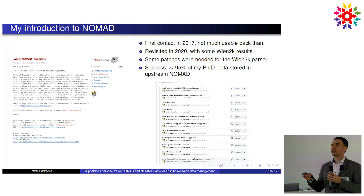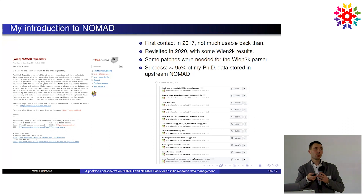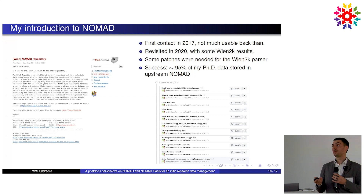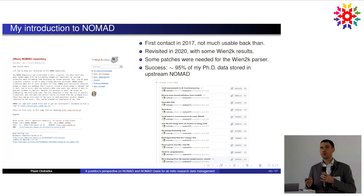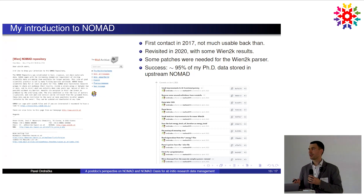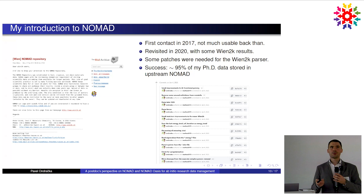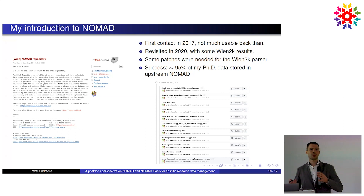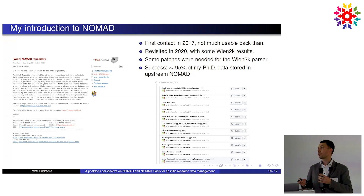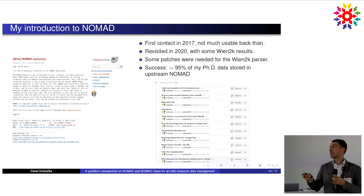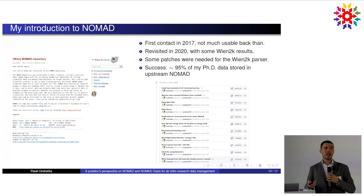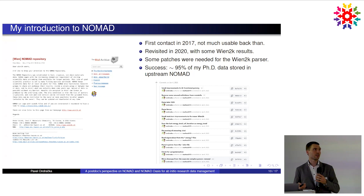I thought that in general I really liked the NOMAD concept, and if it were working better it would be perfect for me. So I took a look at the Wien2K parser. Even though I'm not a good Python programmer — actually a very bad one — I was able to make some changes, because the developers were very helpful. They helped me polish the code and I was able to get some changes upstreamed to the Wien2K parser on GitHub. With that, it was pretty much working for around 95% of my PhD data, and I was very happy.